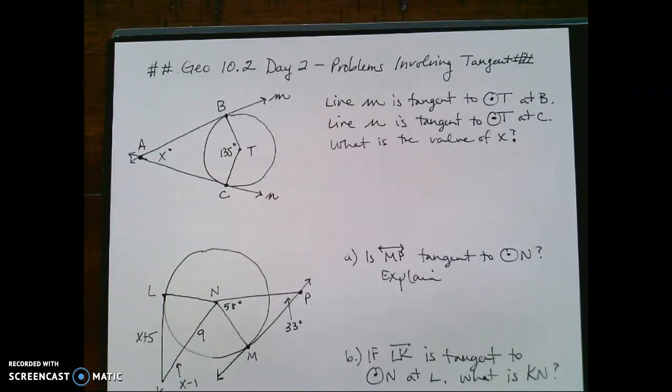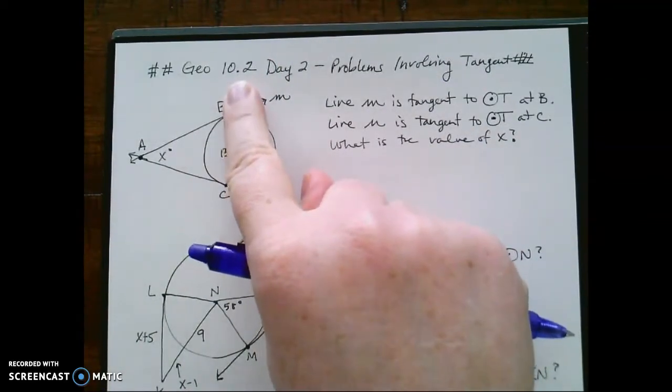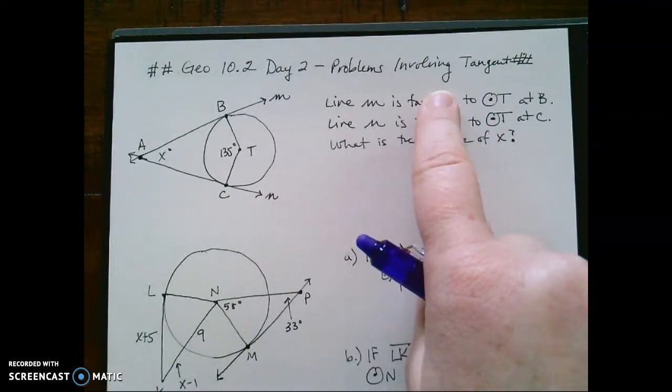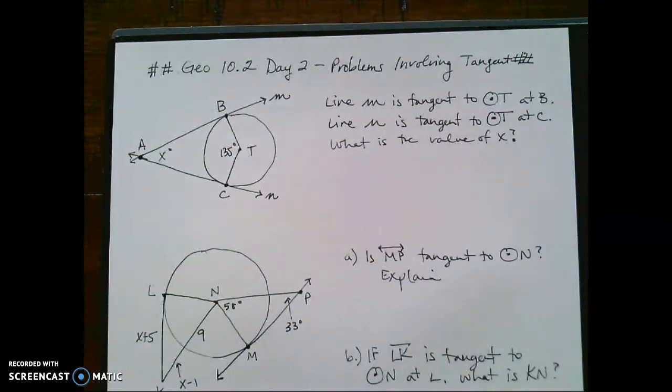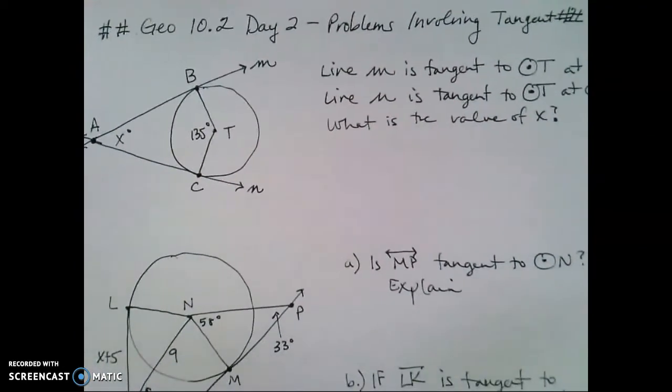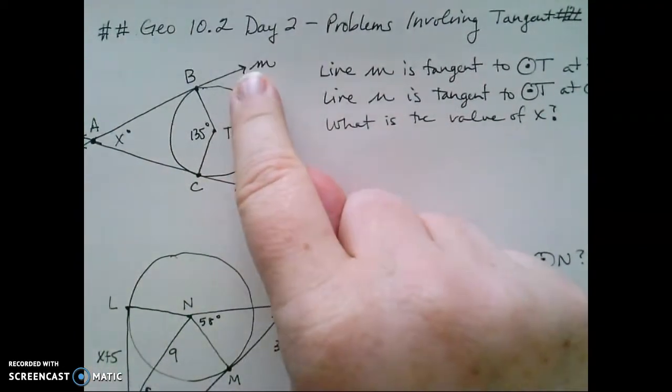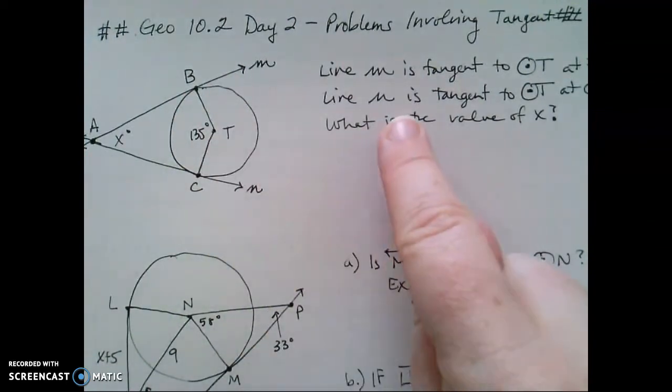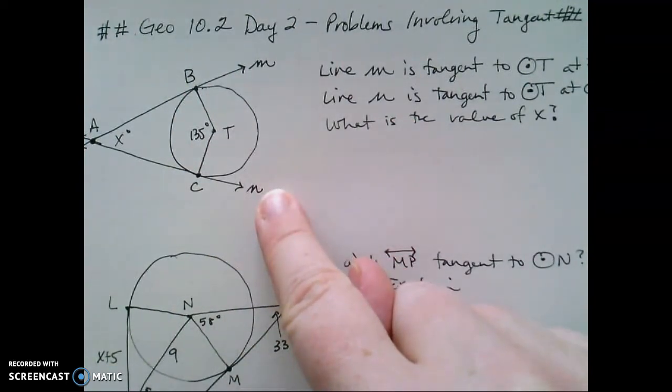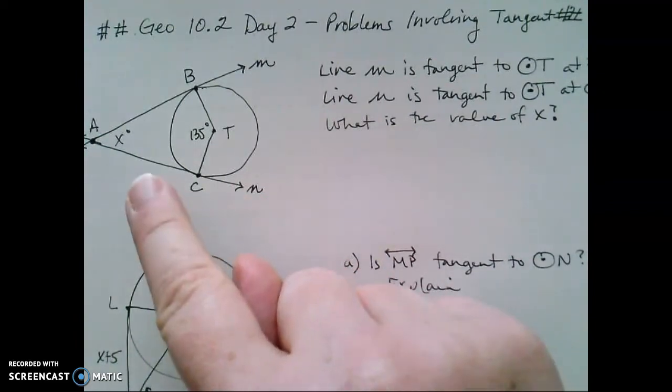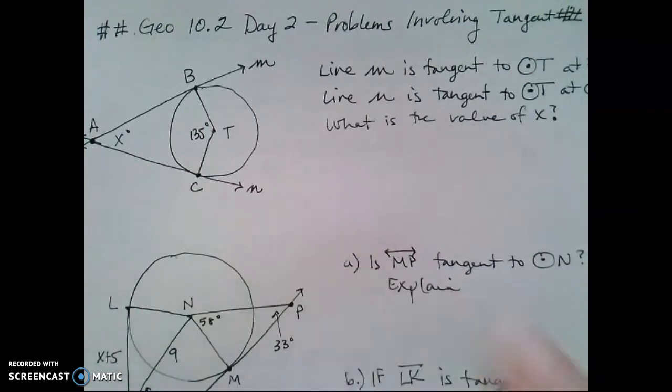All right, welcome back to the last lesson of this week. We're going to wrap up section 10.2, which is using tangent lines to solve various problems. So our first example, we are told line M is tangent to circle T at B, line N is tangent to circle T at C. Use this information to find the value of X.